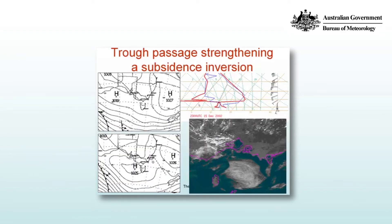Here's an example where we don't have a front moving through but a trough. On the top MSLP analysis you can see the dot-dashed line to the west of Melbourne, and then the bottom chart shows it has moved into the Tasman Sea. The result is a sharp but shallow inversion shown in the sounding in the top right, and underneath that shallow inversion cloud has been trapped. As you can see in the satellite image, there's a rotating vortex of cloud, but it's only shallow cloud because of that very strong and shallow inversion.